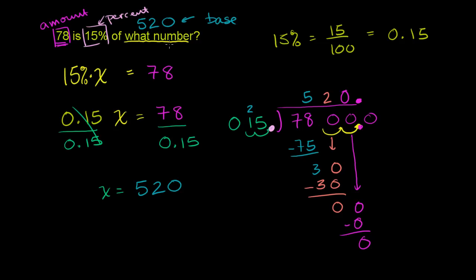It's nice to know those if that's used, that's the terminology used in your class. But the important thing is to be able to just answer this question, and it makes sense. Because 15% is a very small fraction. So 78 is a small percentage. If 78 is a small percentage of some number, that means that number has to be pretty big. It has to be pretty big, and our answer gels with that. This looks about right. 78 is about 15% of, or it is exactly 15% of 520.